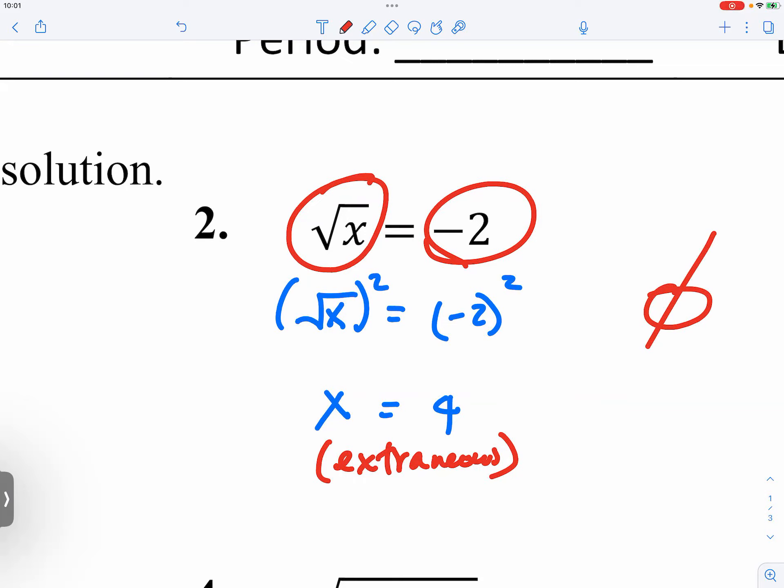Nothing, because if you want to keep things real, the smallest possible number for x would be zero, and square root of any number must be at least zero or above. There is no way that square root of x is equal to negative two.